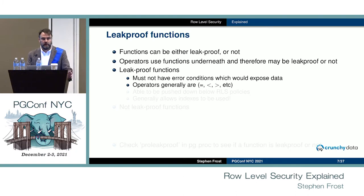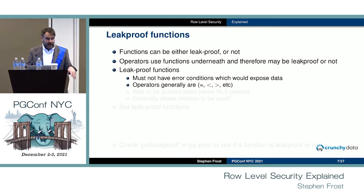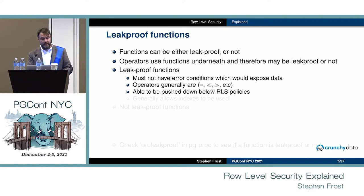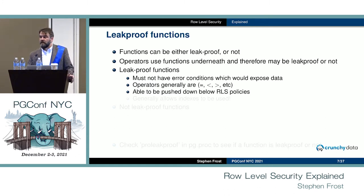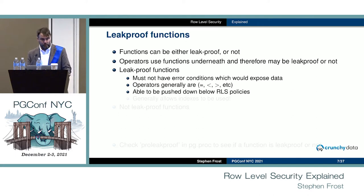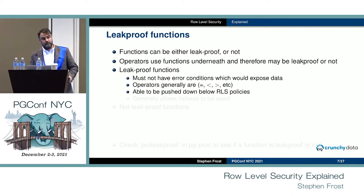Operators like equality, greater than, and less than generally do not have any error conditions where they'd expose data, which is really handy because those are the things you want pushed down below your RLS policies to leverage indexes. The key thing about leak proof functions is that if a function is marked leak proof it can be pushed down below the policy. So if you have SELECT * FROM my_table WHERE x = 5, that equality function is marked as leak proof and can be pushed down before any policies, leveraging an index on column x.